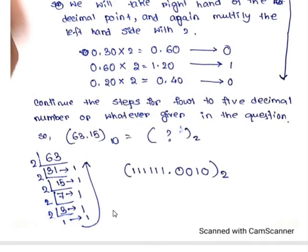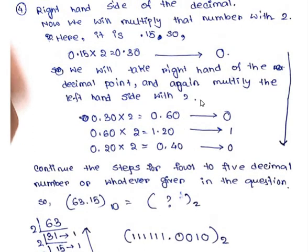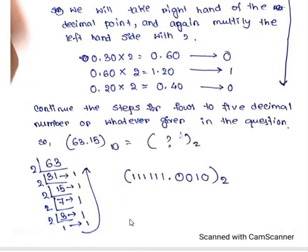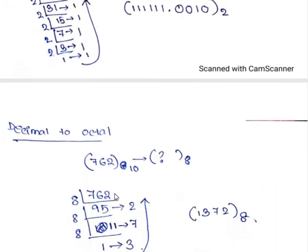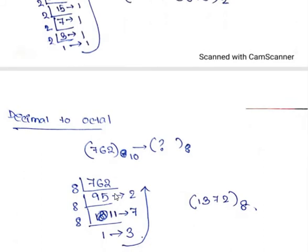So for 63.15, as I have already calculated the right-hand side of the point, it will be 0, 0, 1, 0. I will take that order. And the left-hand side, which is 63, I do the same division process and I get 111111. So the final answer is 111111.0010 base 2.